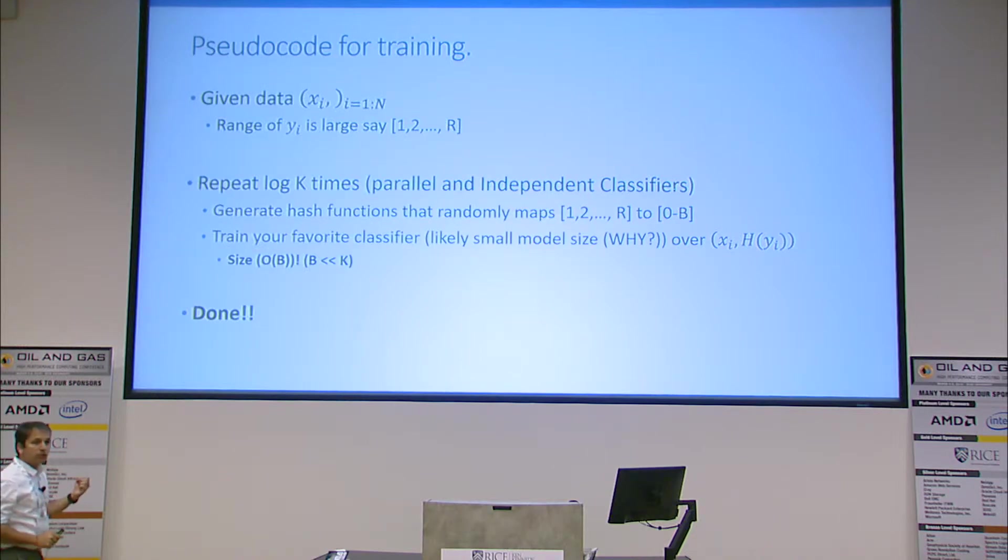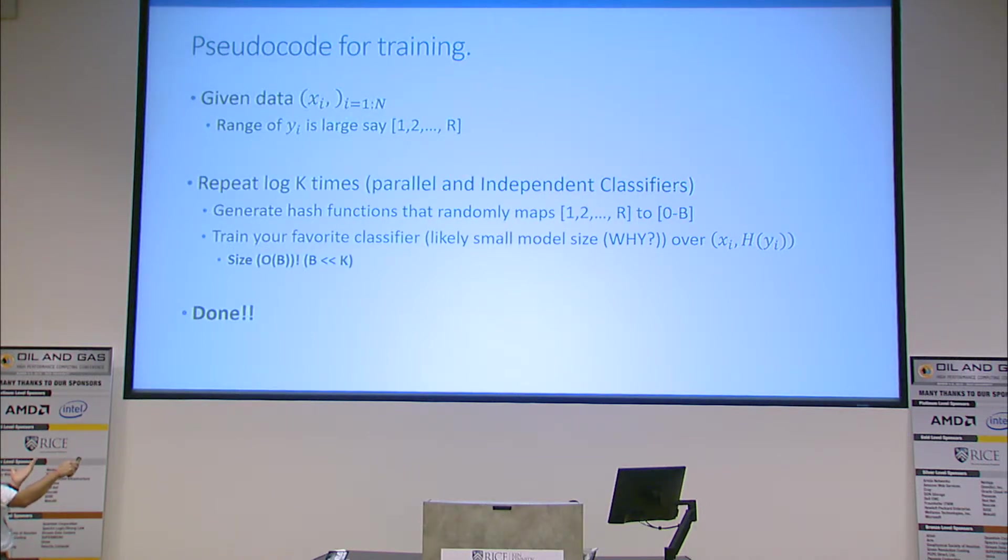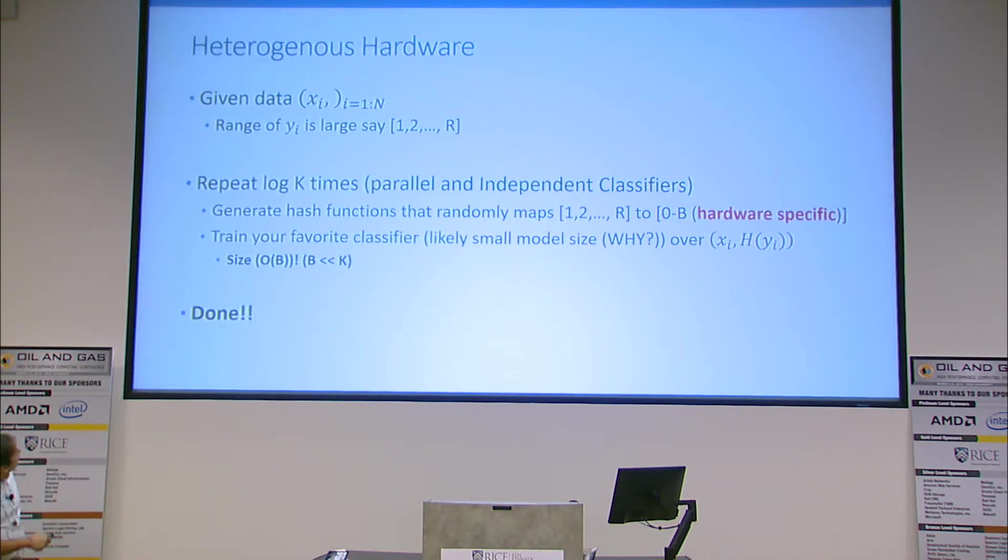The pseudo code is simple. I'm given Xi and Yi, my training data. I take Yi and use a hash function to map it to some small number of classes. From 1 to R, I hash it to 0 to B, and train your favorite classifier over Xi comma the hash of Yi. Then you're done. You can do this as parallel and independent classifiers that don't have to talk with each other.